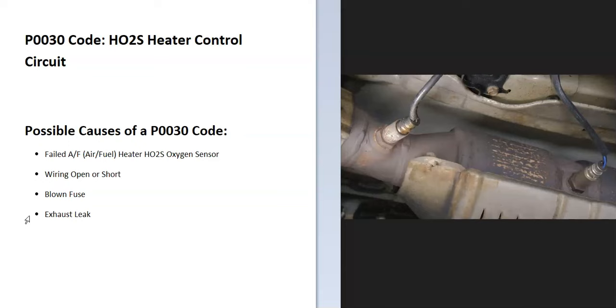The heater elements help go into what's called a closed loop quicker, and they also monitor the catalytic converter since the catalytic converter can heat up too much when it starts to fail. So the heater elements are watching for this. With the P0030 code, the onboard computer is seeing a problem in the heater elements inside of these O2 sensors, so it's going to have to be troubleshooted to know why.